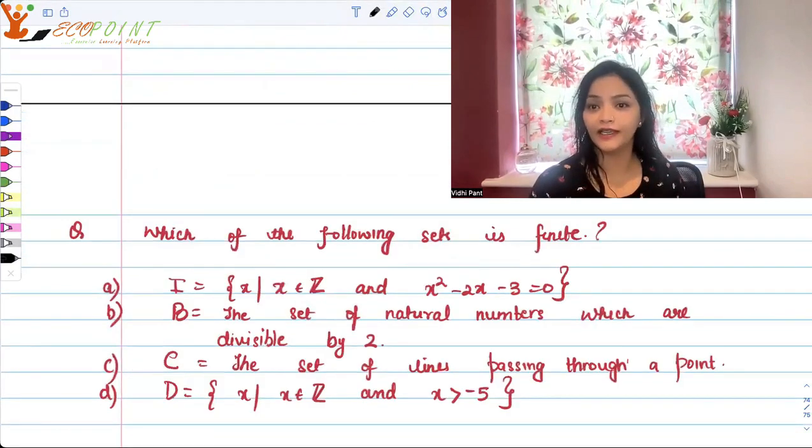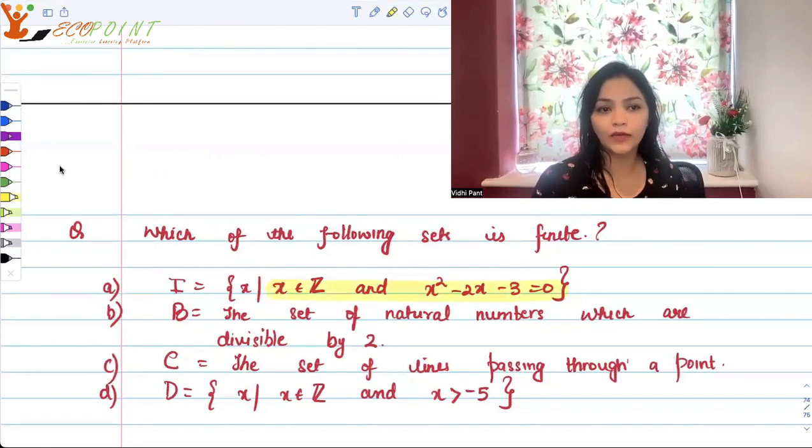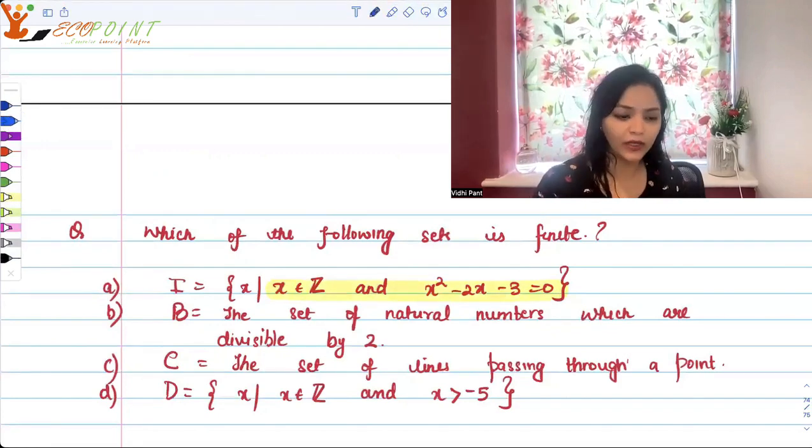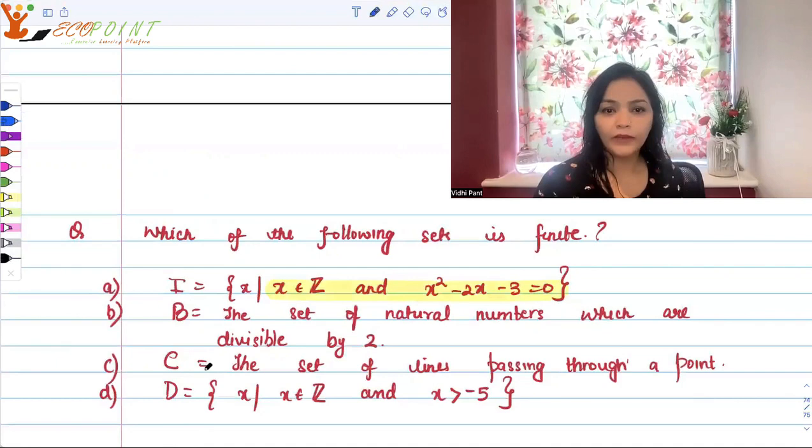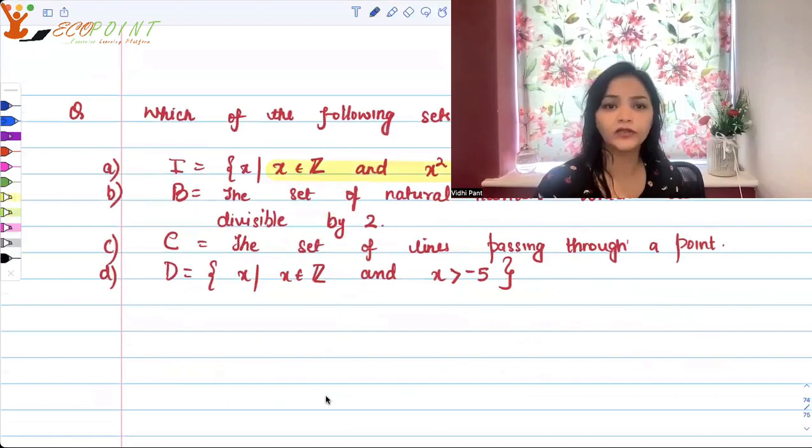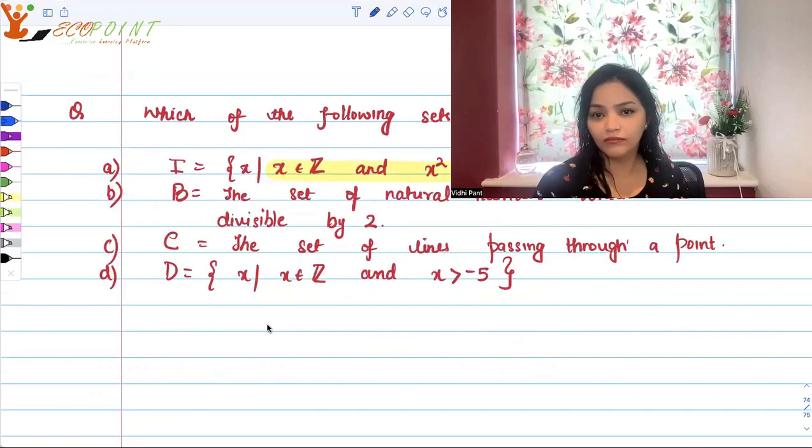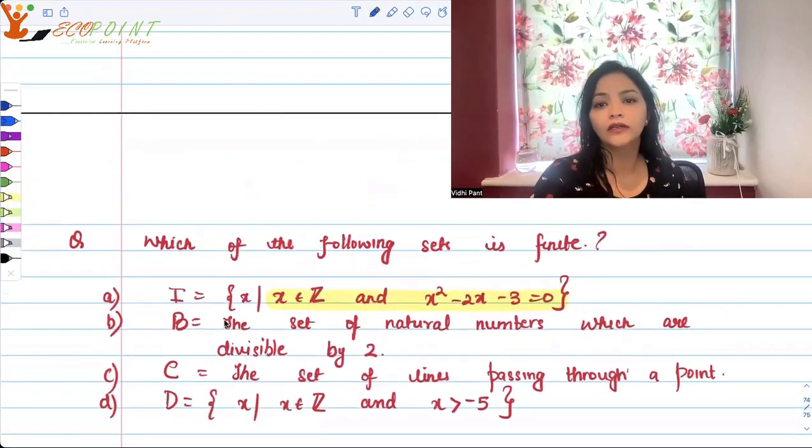Another question for your revision. Which of the following sets is finite? I is the set of all x's which are integers and such that they are also satisfying that x squared minus 2x minus 3 equals to 0. B is the set of natural numbers which are divisible by 2. C is the set of lines passing through a point. D is the set of x's integers strictly greater than minus 5. We want to talk about finite sets.